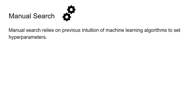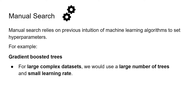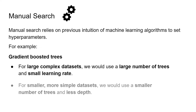Our first hyperparameter optimisation method is manual search. This relies on previous intuition and knowledge of machine learning algorithms to set hyperparameters. For example, if we were using gradient boosted trees and we had a large complex dataset, we would use a large number of trees and a small learning rate. For smaller, more simple datasets, we would use a smaller number of trees and less depth. So manual search is just using our intuition of machine learning algorithms and the complexity of the dataset to set hyperparameters ourselves.